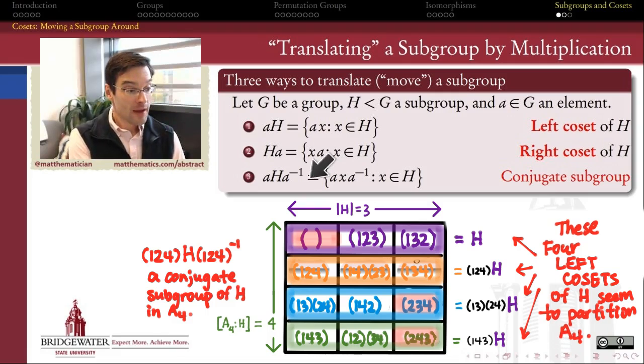Furthermore, if I conjugate H by an element, say if I conjugate it by (1,2,4), left action and right action combined, that the result is this element, that element, that element, that result is a subgroup of H. But that all the other left cosets, this row, this row, that row, those cosets are not subgroups.